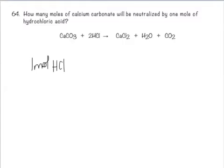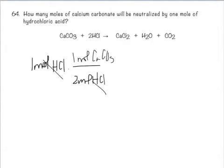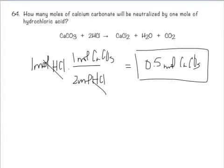Here we have to start with what we know. We know we have one mole of hydrochloric acid. According to the balanced formula, for every two moles of hydrochloric acid, you get one mole of calcium carbonate. So multiply and divide, you get a half a mole of calcium carbonate.